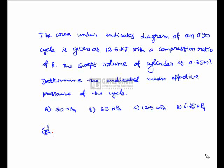The area under the indicator diagram of an Otto cycle is 12.5 kJ, with a compression ratio of 8. The swept volume of the cylinder is 0.25 m³. Determine the indicated mean effective pressure. Options are 50 kPa, 25 kPa, 12.5 kPa, and 6.25 kPa.